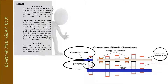The clutch shaft carries the engine output to the gearbox and acts as the input for the gearbox. It is also known as the input shaft, while the main shaft is the output shaft.